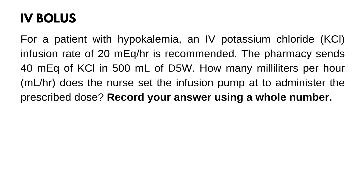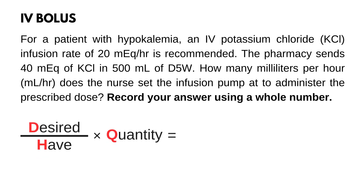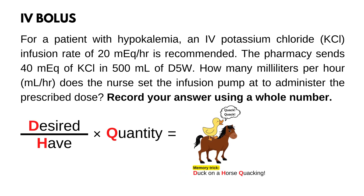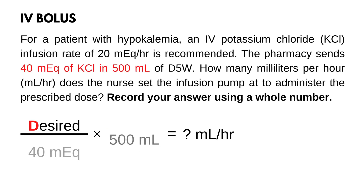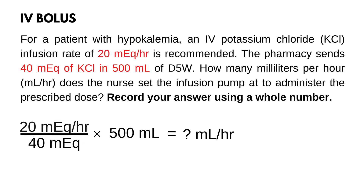The first step is to set up our formula: desired over half times quantity. Use the memory trick to remember it — duck on a horse quacking. Now add the unit answer, mL per hour, because the question is asking how many mL per hour. With the formula organized, we are going to plug in the numbers. Start with half and quantity: 40 mL equivalent of potassium chloride in 500 mL of D5W. For desired, plug in the doctor's order: 20 mL equivalent per hour.